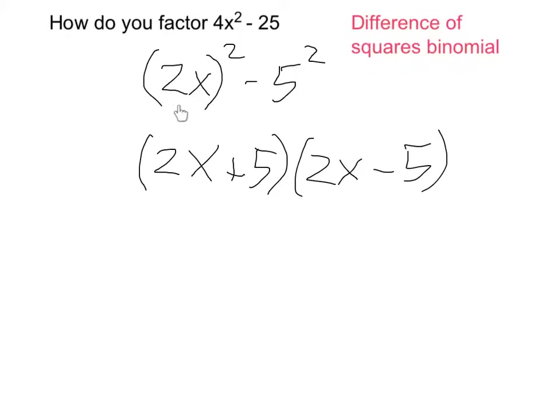My 2x, I put that in the first binomial factor, so it's 2x. Then I do a plus 5, and secondly, I take the 2x again and do a minus 5. That is your answer. That's it in factored form.